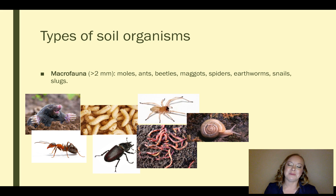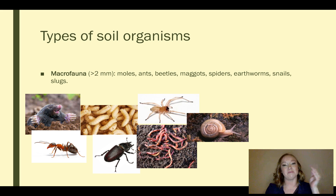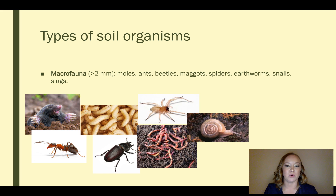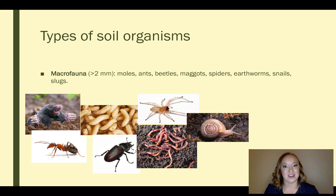There are different types of soil organisms and I'll be discussing them based on their size. We're going to start with the biggest and then move down to the smallest. The biggest group is called macrofauna and these are larger than two millimeters in size. I've included a few pictures of some of the macrofauna such as moles, ants, beetles, maggots, spiders, earthworms, snails, and slugs. These are things that you can see with the naked eye.